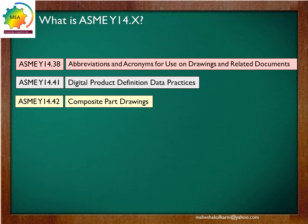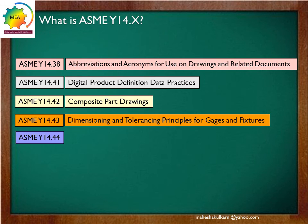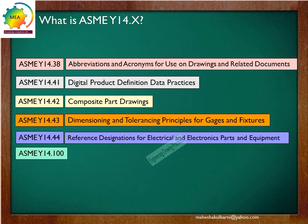ASME Y14.43 clearly explains how composite part drawings should be drawn, and it also deals with dimensioning and tolerancing principles for gauges and fixtures. ASME Y14.44 — subcommittee 44 deals with reference designators for electrical and electronic parts and equipment. ASME Y14.100 deals with engineering drawing practices.